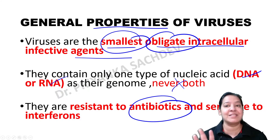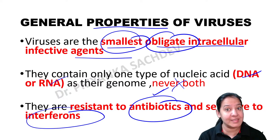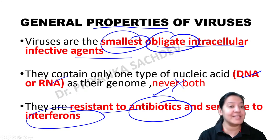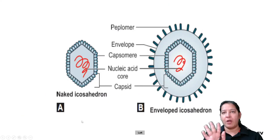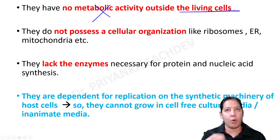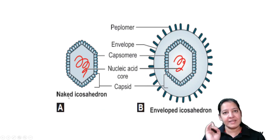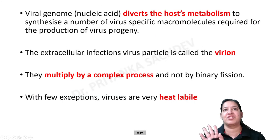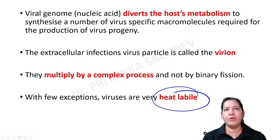We can classify viruses based on whether they have DNA or RNA as genetic material - never both. We can kill bacteria using antibiotics, but we cannot kill viruses with antibiotics because bacteria and virus structure is different. To kill a virus you have to use interferons. Viruses are resistant to antibiotics but sensitive to interferons. Also, all viruses are heat labile - with few exceptions, they are killed by heat.